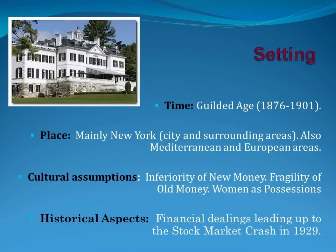The fragility of old money is another cultural assumption—that same mindset we see in Austen—along with women as possessions. The financial aspects are very important in this novel and form part of the setting. The historical aspects deal with finances and the situation leading up to the stock market crash in 1929.